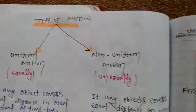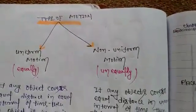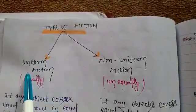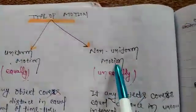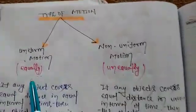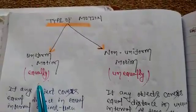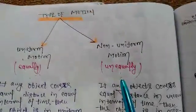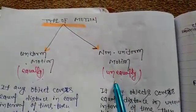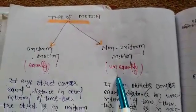Now we will discuss about types of motion. First is uniform motion, second is non-uniform motion. Uniform motion means equal in amount, or equally. Non-uniform motion means not equal in amount, or unequal.